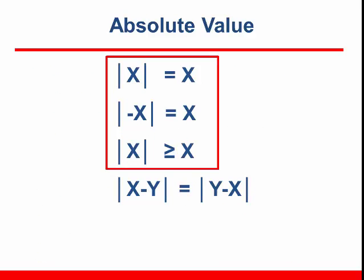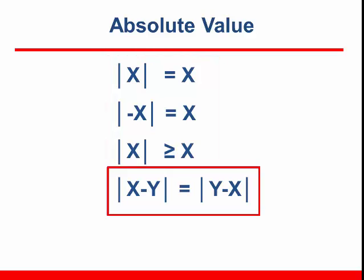Taking the absolute value of a number always results in a positive value. The absolute value of a positive or negative value is positive. The absolute value of the difference between two values is indifferent to the direction of the subtraction.